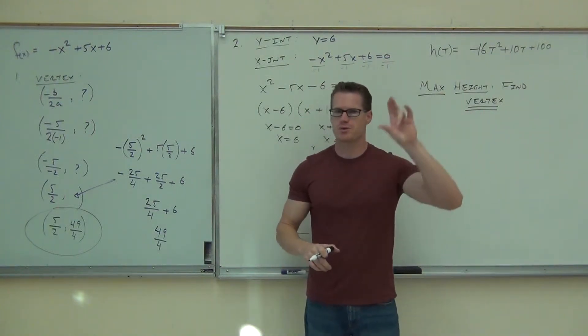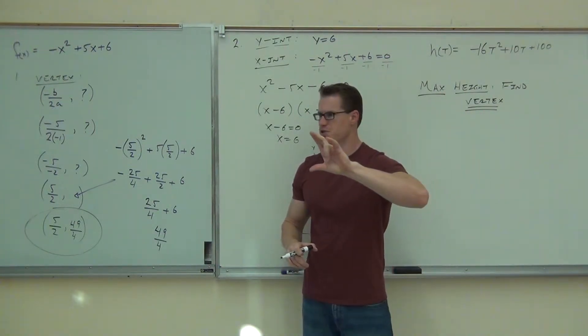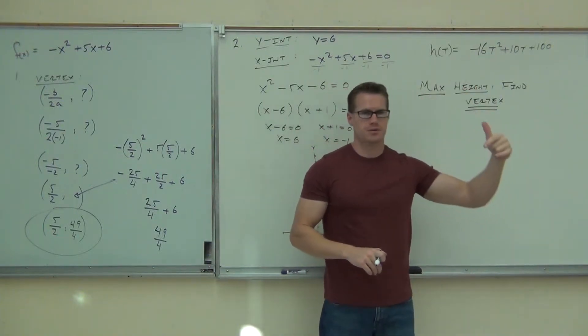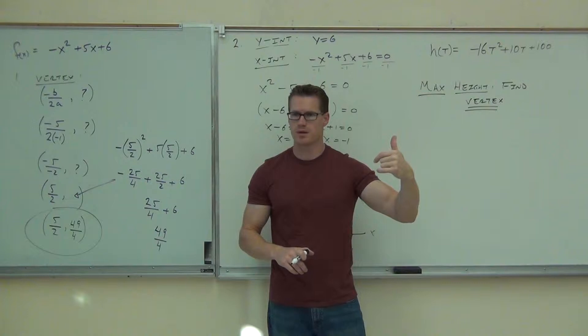I'm not going to go through that with you. You do negative B over 2A, you can find the vertex yourself, okay? The X will be the time, the Y will be the height. So, you're going to get some time, some height. Did you follow me on that?